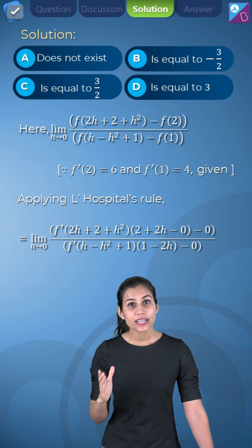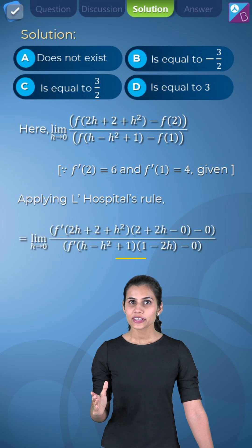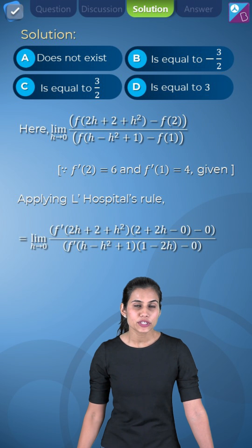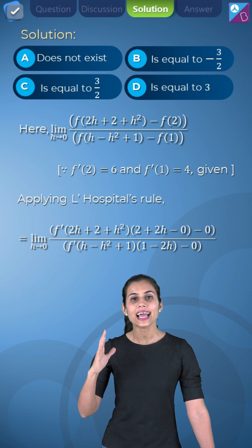We will differentiate the numerator expression and the denominator expression separately with respect to h using the chain rule. Once this is done, we will again substitute the value of h as 0 in the numerator and the denominator.